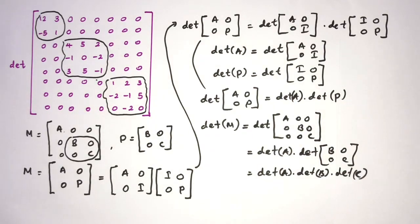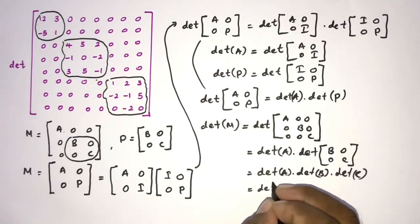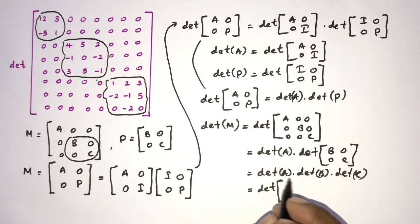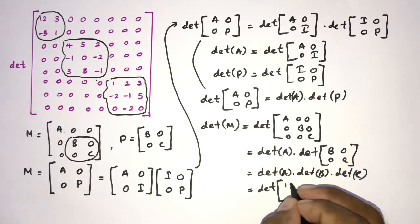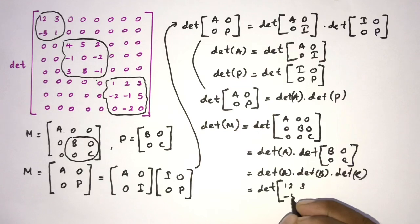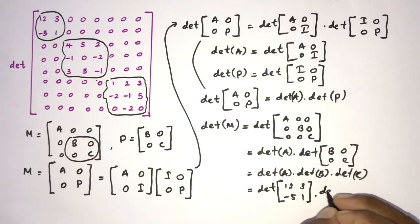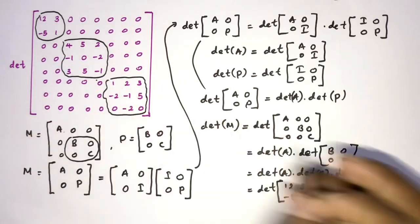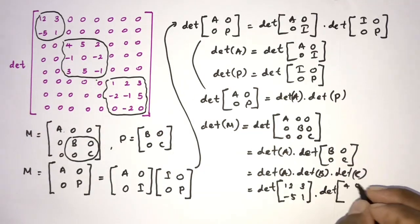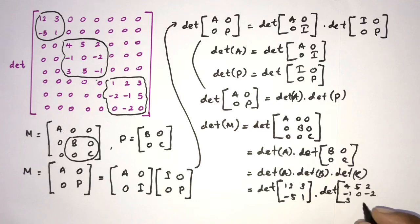Now we know here determinant of A is equal to 12, 3, minus 5, 1, and then determinant of B is equal to here 4, 5, 2, minus 1, 0, minus 2, 3, 5, minus 1, times